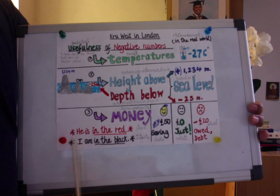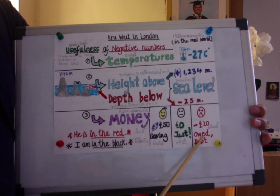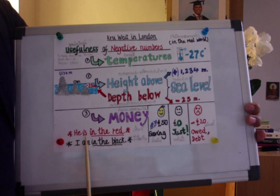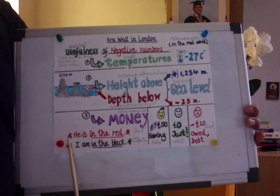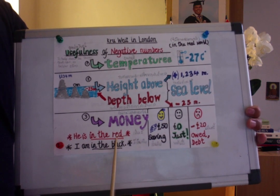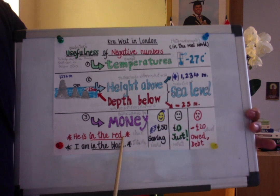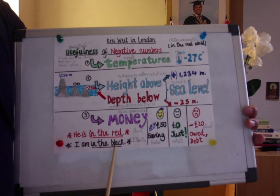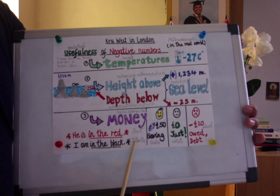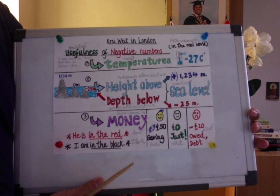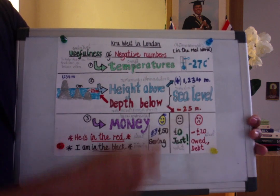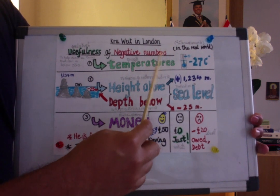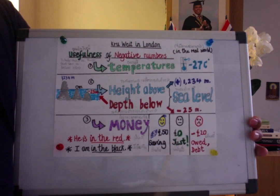In English, for the person who is in debt, you can say 'he's in the red.' But if someone is lucky enough to have savings, you say 'I'm in the black' — meaning you have money left over this month. These are three scenarios where we find the use of negative numbers.